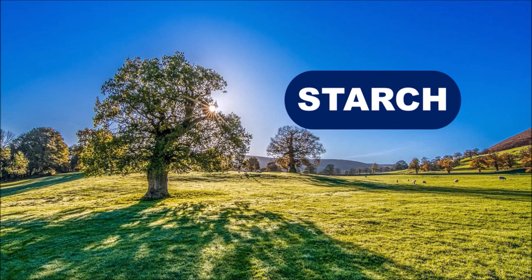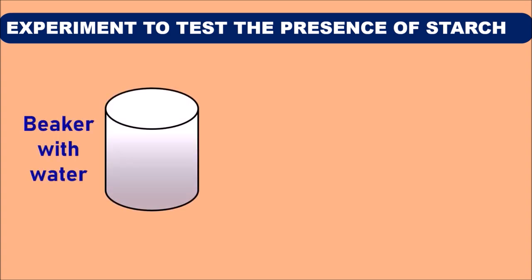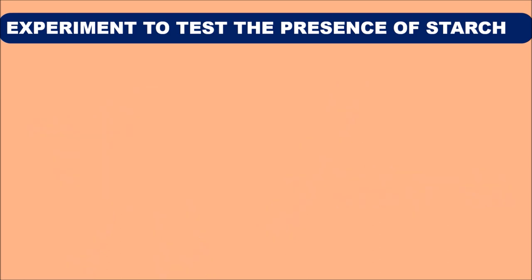For this we need to conduct an experiment to test the presence of starch. The requirements for this experiment are: a beaker with water, stand and burner, a test tube with a leaf, and methylated spirit. Now let us see the procedure to conduct this experiment.